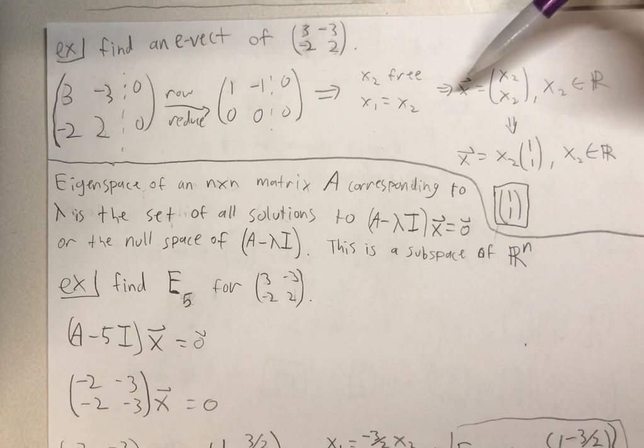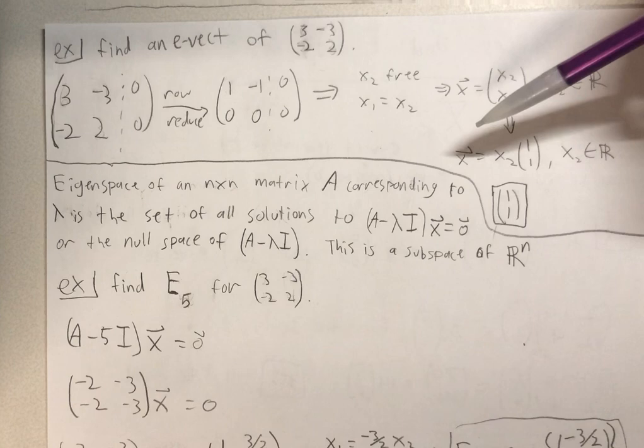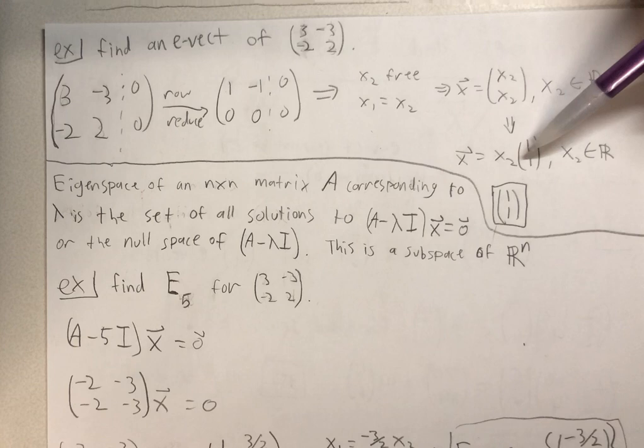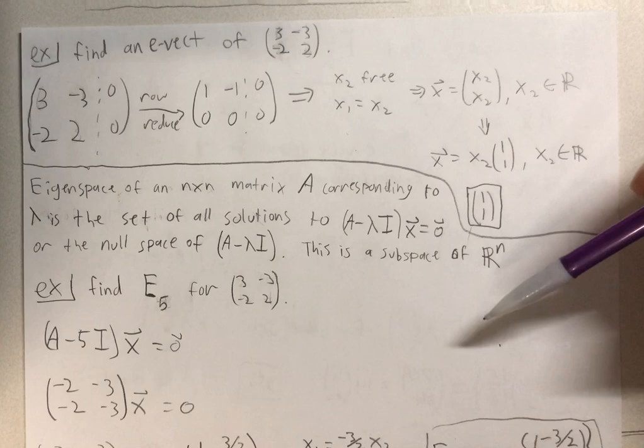So vector X equals X2, X2, where X2 equals, or X2 is any real number. So our eigenvector X equals any X2 times 1, 1, where X2 is a real number. So an eigenvector of this matrix could be 1, 1.